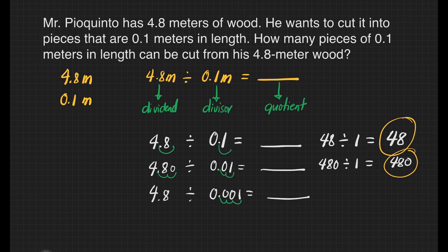We will do that also to our dividend. That's one, two, and three, and fill out this with zeros. Our new division sentence is 4800 divided by one, and that gives us 4800.